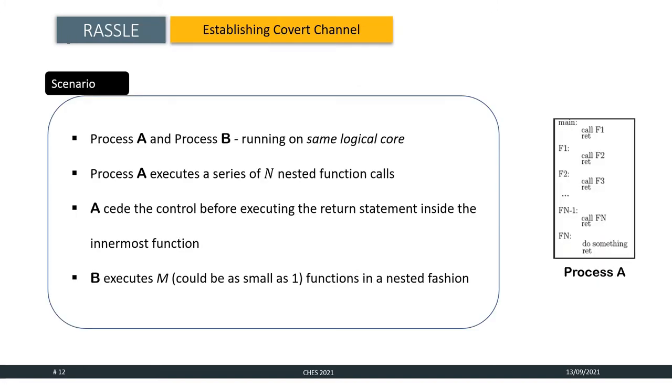We exploit the fact that an overflowing RAS can result in an increase in execution time and this difference in timing can be observed by a co-located process to establish a covert channel between two processes. Consider the scenario where two processes A and B are running simultaneously on the same logical core. Process A executes a series of N nested function calls where function F1 is calling F2 which in turn calling F3 and so on. Therefore, for each function call an entry is inserted in the top of the stack. We choose N such that the entire stack gets filled with the return addresses. Inside the innermost function for A, it yields the CPU before executing the return instruction. Therefore, the entire RAS is filled with the return address of process A and at this point it is yielding the control of the CPU to another process B.